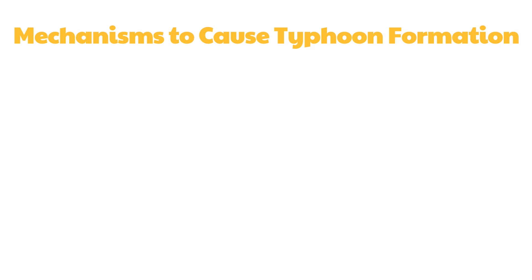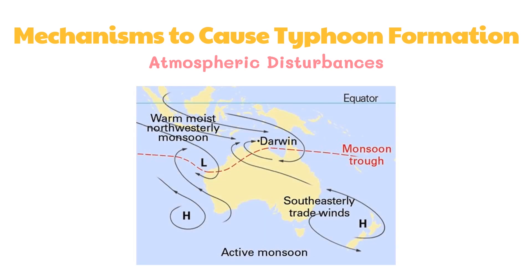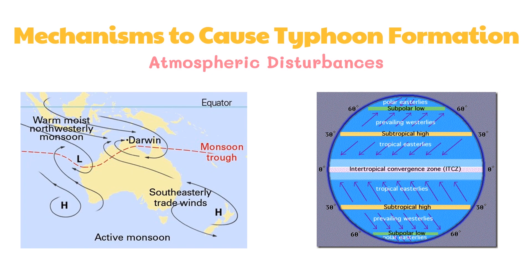If all of the preconditions are met, typhoon formation then becomes possible. There are several types of atmospheric disturbances that can cause a typhoon to develop. The most common mechanism is the monsoon trough — an extension of the intertropical convergence zone where cyclonic spin has developed. The intertropical convergence zone is a zone of wind convergence of the northeast and southeast trade winds. This trade wind trough does not contain the spin to initiate typhoon development.